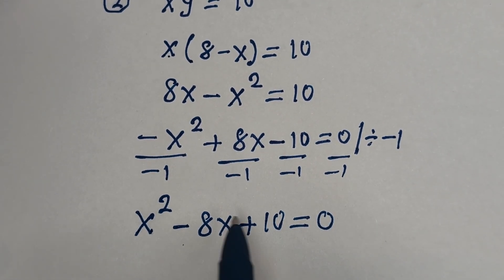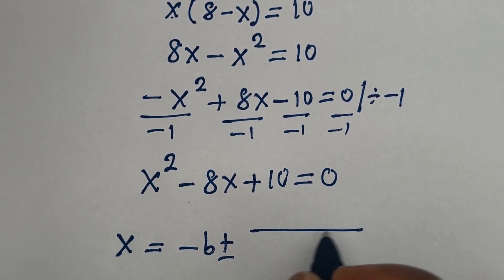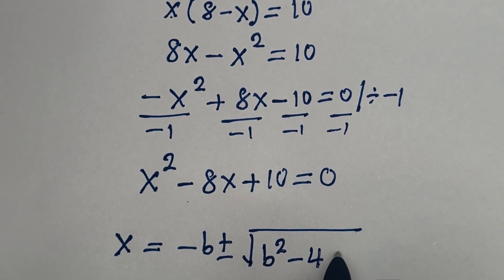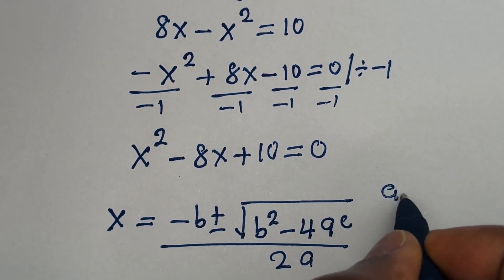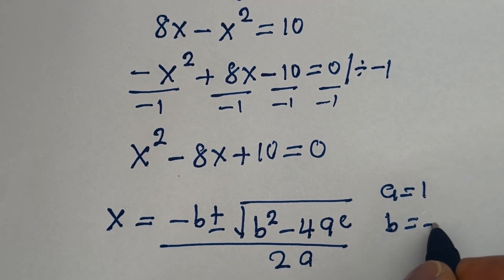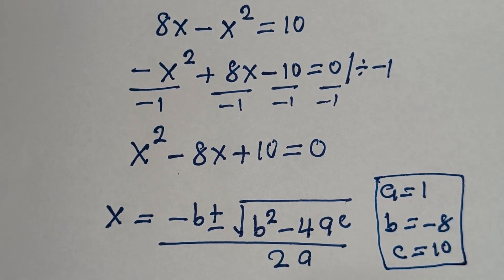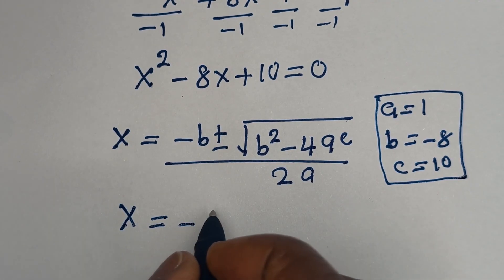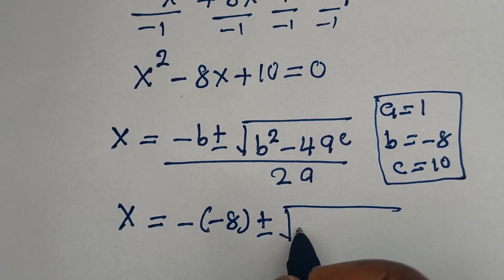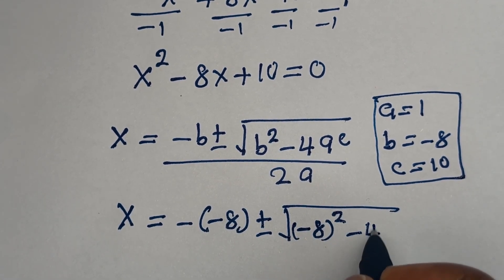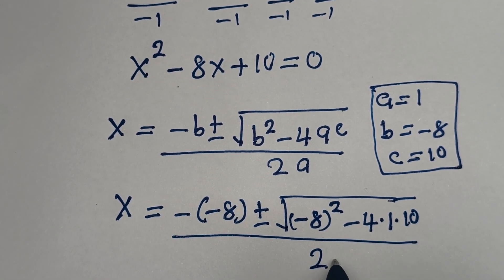We have x squared minus 8x plus 10 is equal to 0. This is a quadratic equation. Let's solve this using the quadratic general formula: x equals minus b plus or minus square root of b squared minus 4ac, all over 2a. From this equation, a is equal to 1, b is equal to minus 8, and c is equal to 10.